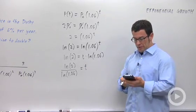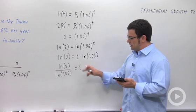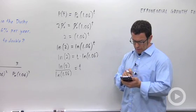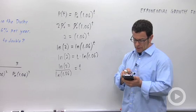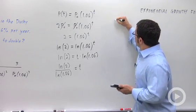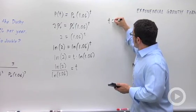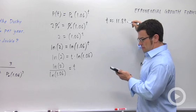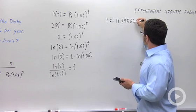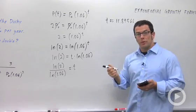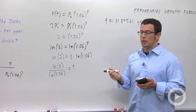Now I'd like a numerical answer. So I'm going to calculate this value. ln 2 divided by ln 1.06. Enter. I get t. T is approximately 11.89566. And that would be in years. Because the population growth rate was given as 6% per year.